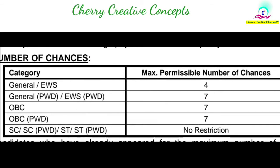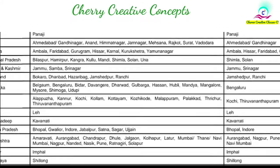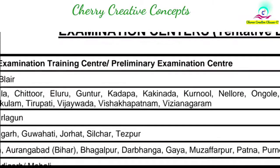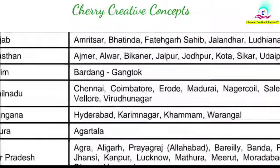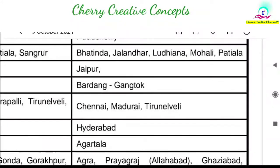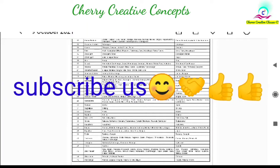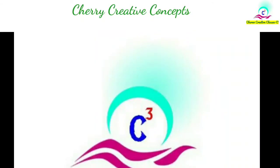An important point: the number of attempts allowed. General and EWS candidates can attempt 4 times, similar to Civil Services. SC and ST candidates have no restriction on attempts, while OBC candidates can attempt 7 times. Exam centers cover all major cities. The Prelims exam has many centers, while the Main exam has 4 centers including Hyderabad. The notification details, cutoff links, previous papers, and application link are all in the description. If you have any doubts, please let me know in the comment section. Please subscribe to my channel for more useful information. Thank you.